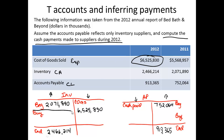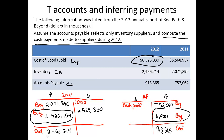Thus, we can back into how much inventory we bought on credit. The amount of inventory bought on credit was $6,920,154. And if we bought it on credit, accounts payable also increased by $6,920,154. So, to answer the question of how much cash did we pay for inventory, it's simply finding the missing number: $6,758,853.